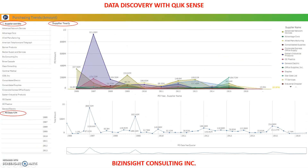In the next page, we continue with our purchasing trend. On the left-hand side, we have a filter for supplier, sites, and dates. At the top, we have a line chart to show the yearly sales, and at the bottom, we have a line chart to show the quarterly sales.